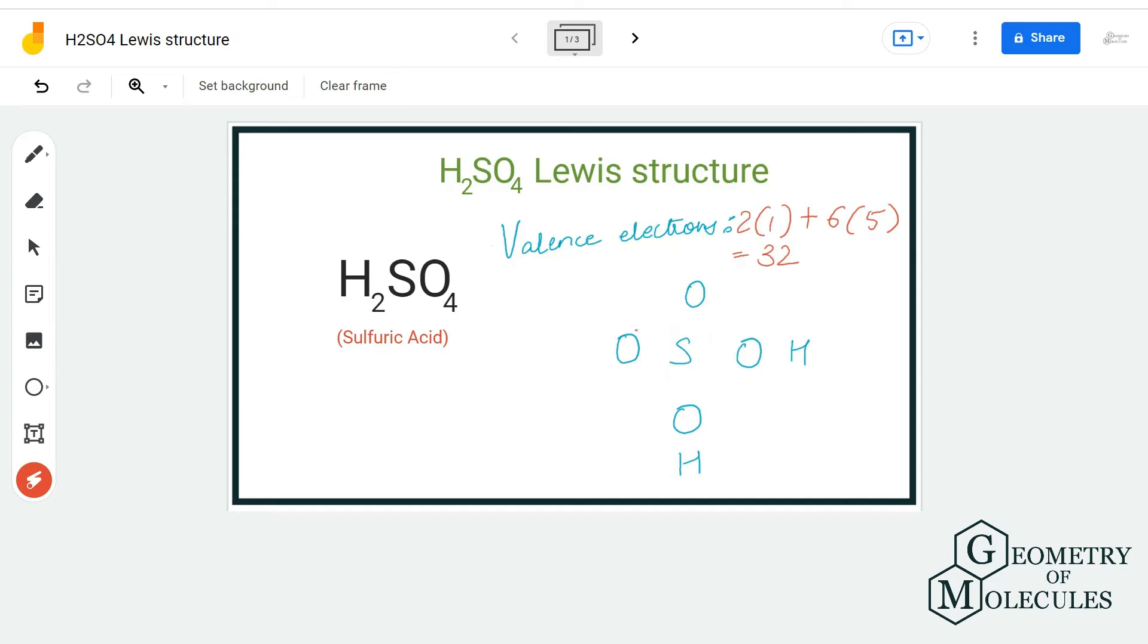Once we know the total number of valence electrons, it becomes really easy to find out the arrangement and placement of electron pairs for bond formations. I am going to place the sulfur atom in the center, all the oxygen atoms around it, and hydrogen atoms next to the oxygen atoms.